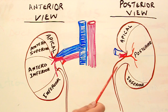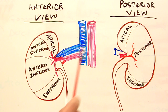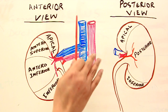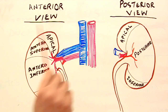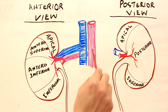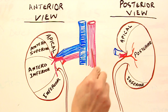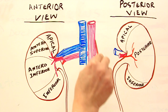The renal arteries, the right and left, have been given off by the aorta at the level of intervertebral discs between L1 and L2. And they have been given off roughly at a right angle.